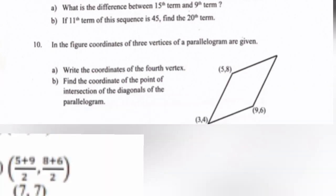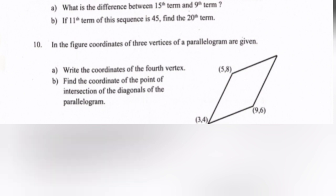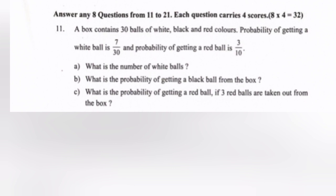Question 10: In the figure, coordinates of three vertices of a parallelogram are given. Part a: Write the coordinates of the fourth vertex. Answer: (11, 10). Part b: Find the coordinate of the point of intersection of the diagonals. Answer: (5+9)/2 comma (8+6)/2, which gives (7, 7).